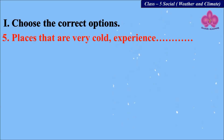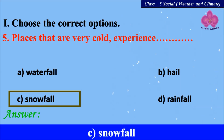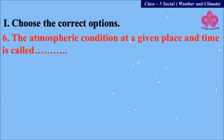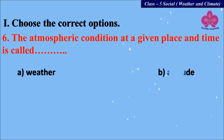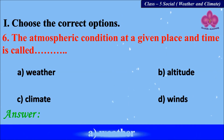Next: places that are very cold experience dash — A) waterfall, B) hail, C) snowfall, and D) rainfall. Next: the atmospheric condition at a given place and time is called dash — A) weather, B) altitude, C) climate, and D) winds. The answer is A) weather.